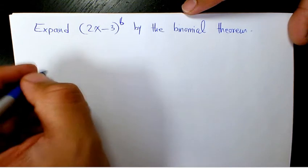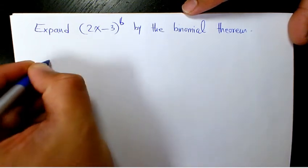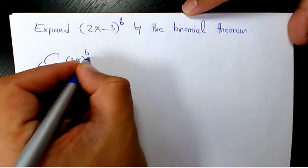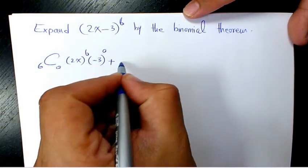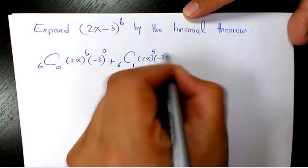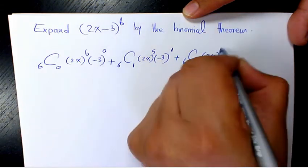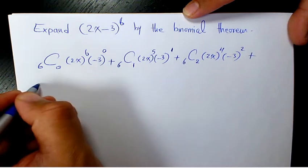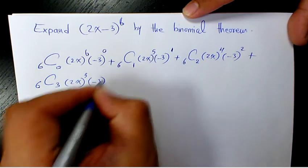To expand it we need to use the binomial theorem, and we're going to have 6C0 times (2x)^6 times (-3)^0, plus 6C1 times (2x)^5 times (-3)^1, plus 6C2 times (2x)^4 times (-3)^2, plus 6C3 times (2x)^3 times (-3)^3.